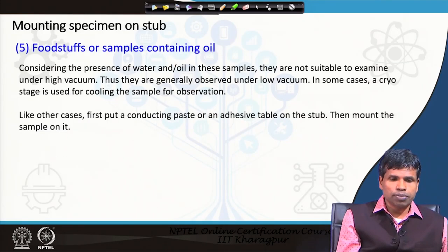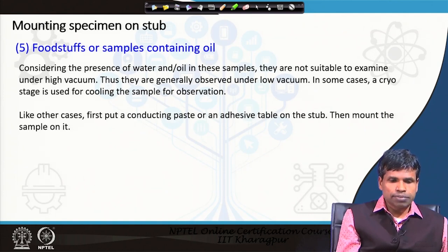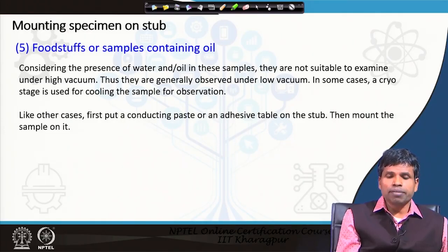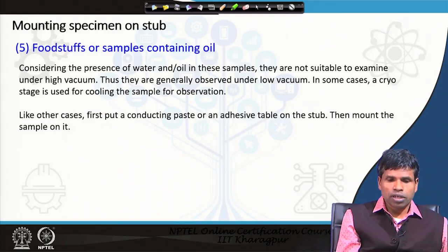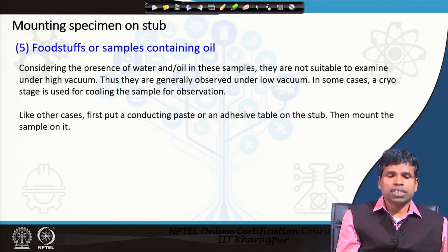Food samples or samples containing oils also need special care because they contain water and oil and are not suitable to be examined under high vacuum. They can be studied under low vacuum using a dedicated microscope called the Environmental SEM (ESEM). ESEM is used for such measurements — for studying food or oil-containing samples. These samples are placed on conductive paste or adhesive tape on the stub, and then the sample is mounted.